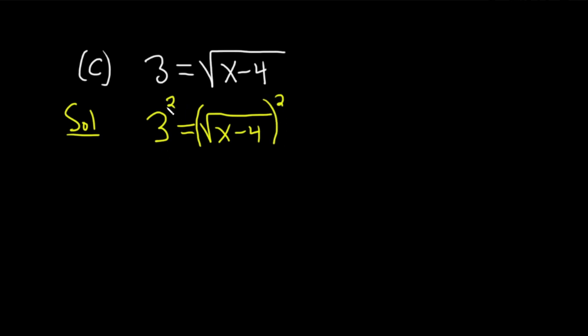So 3 squared is 9. So here we get x minus 4, because the square root goes away when you square it. And then you can just add 4 to both sides. So you get 13 equals x. If you write that backwards, you get x equals 13. So that would be the solution to this equation with square root. So not too bad, not too difficult.